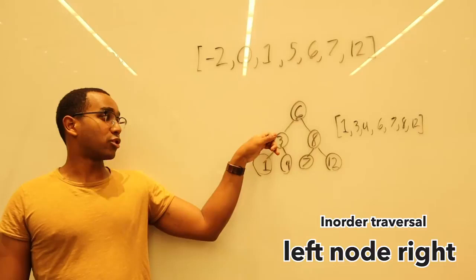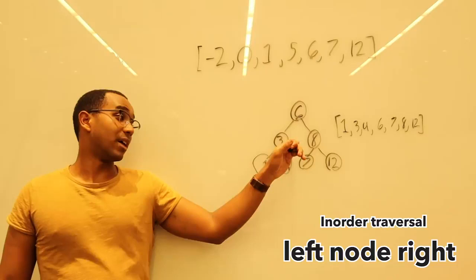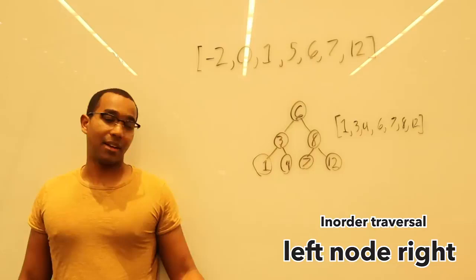Visit the six, go to our right, we'd go then to our left, visit the seven, node, visit the eight, twelve, visit that twelve. That is the in-order traversal.